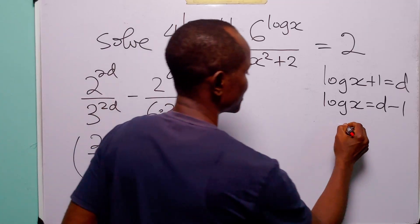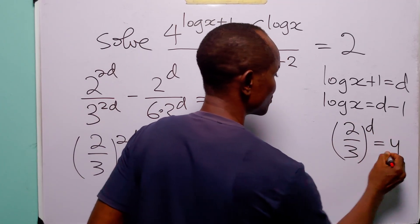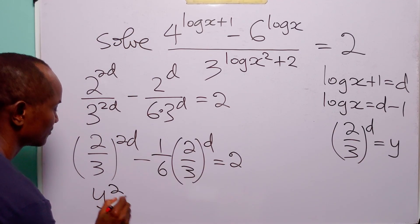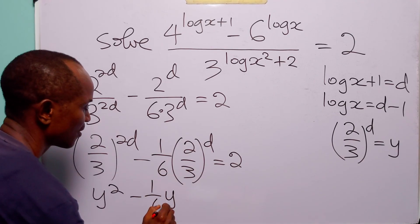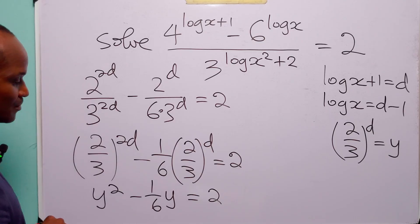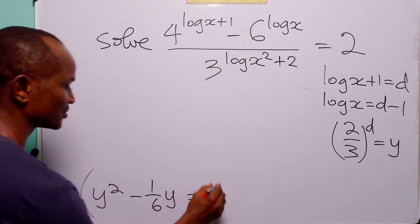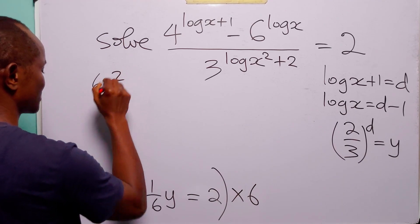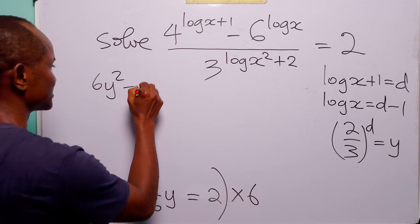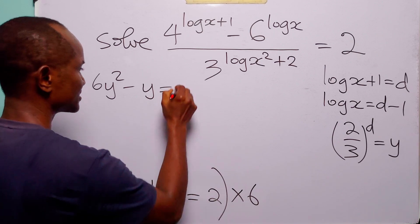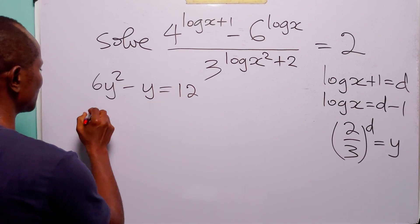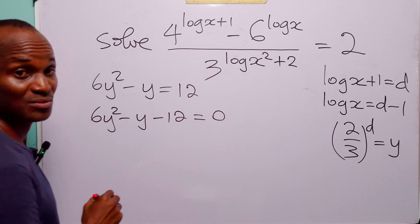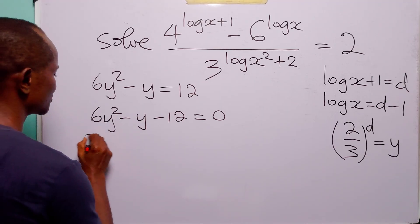Let 2 over 3 to the power d equal y. With this substitution the equation becomes y squared minus 1 over 6 times y equals 2. To clear the fraction we multiply through by 6: 6y squared minus y equals 12. Rearranging, we get the quadratic equation 6y squared minus y minus 12 equals 0.